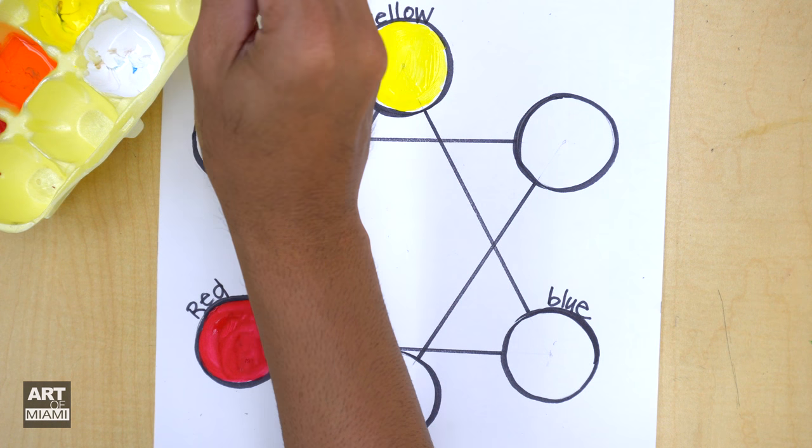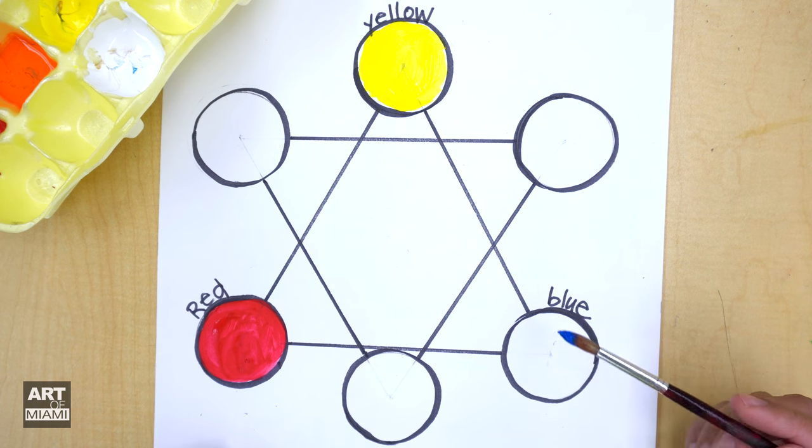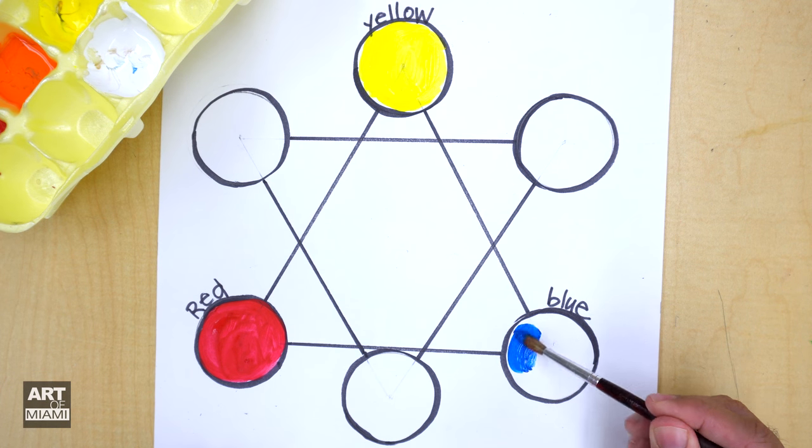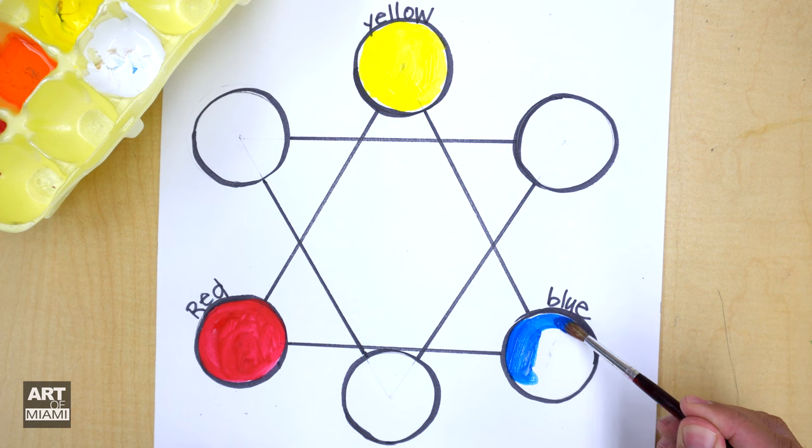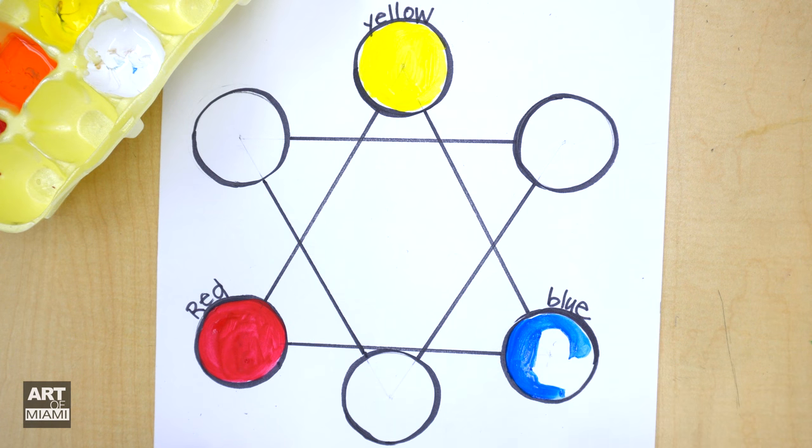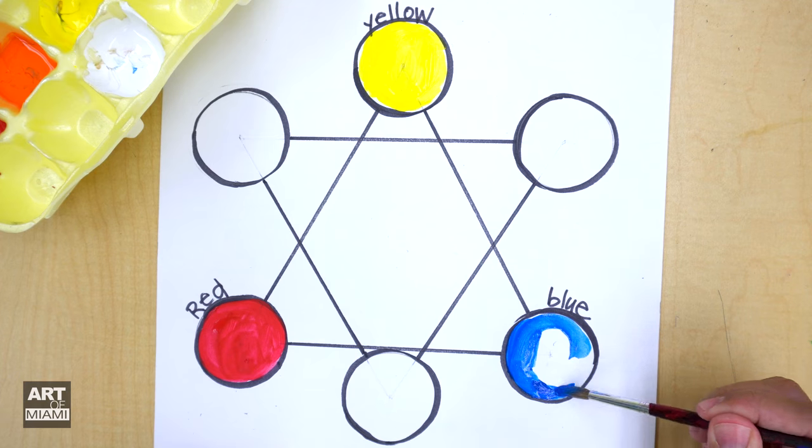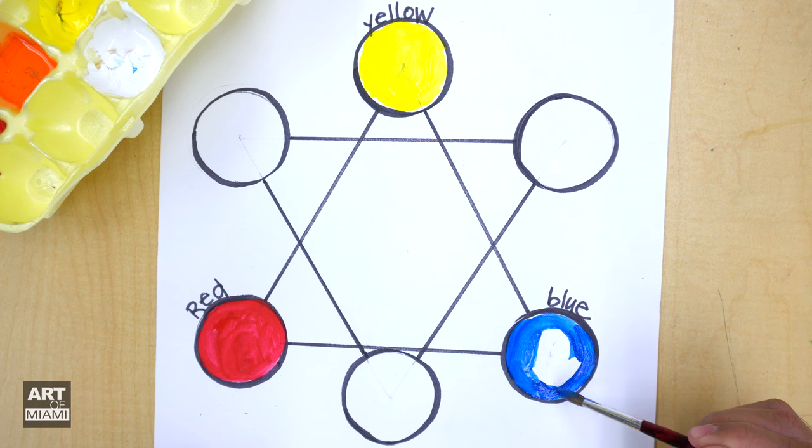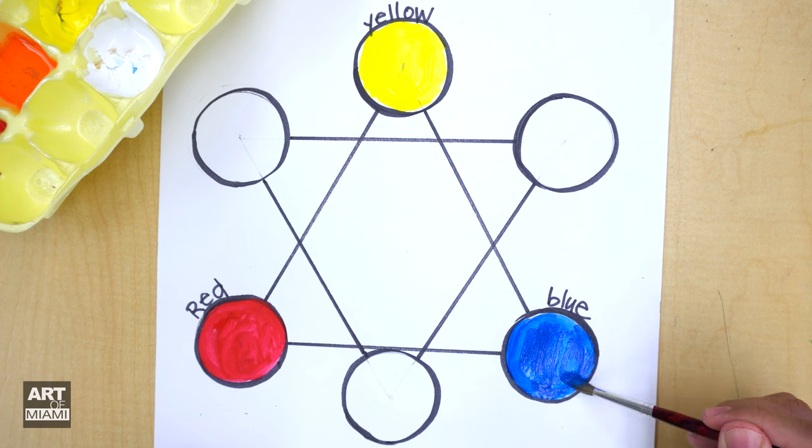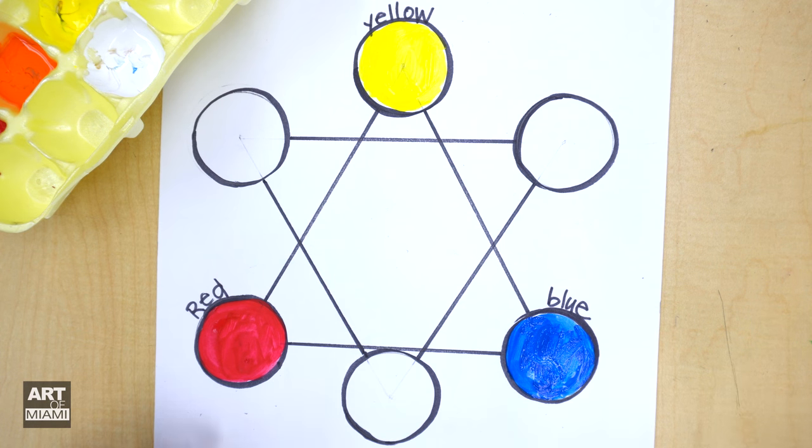All right, I think we're ready for blue. So yeah, start with the edges. When you run out of paint, get more. Some people think that if they just press harder with the brush, more paint is going to come out, which is just silly. So there we go, just fill in the inside. There we go.